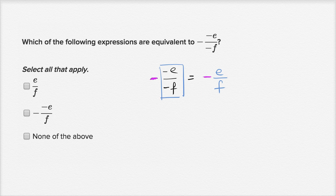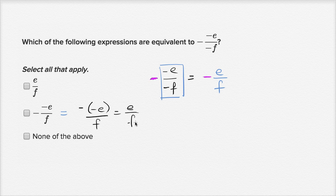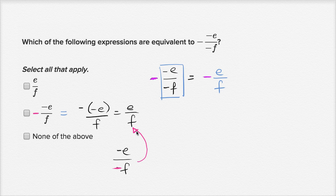So let's see which choices equal negative e over f. The first choice is positive e over f, so that's not it. The second choice could be written as negative negative e over f, which equals positive e over f. You could also put the negative in the denominator, writing it as negative e over negative f — but either way, it evaluates to positive e over f. So neither option matches negative e over f, meaning I would finally select none of the above.